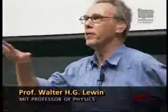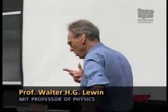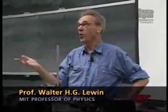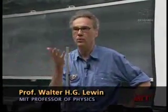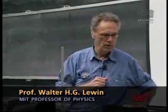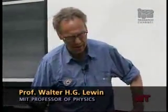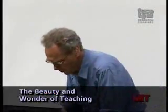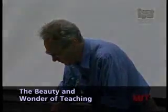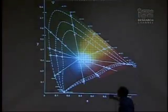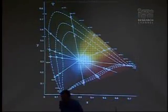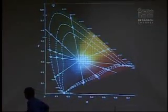There is no wavelength anywhere in there of yellow light, but yet if you mix them properly you can make yellow light. There is no wavelength anywhere in there of purple, but yet if you want to, you can make purple light. So if we can have the first slide, you will be able to see this color triangle, and I'll tell you how this color triangle has to be used.